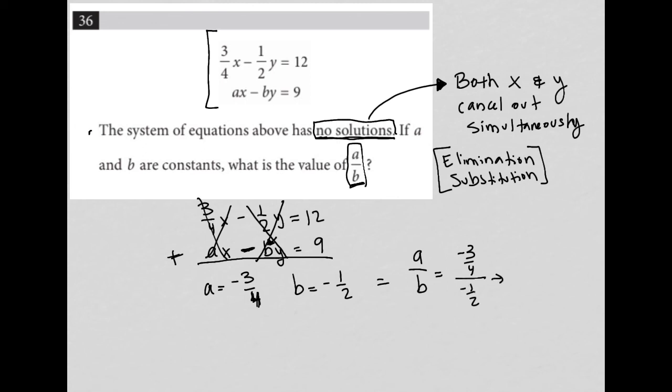I write that as negative three-fourths divided by negative one-half, which turns into negative three-fourths times negative two over one. Doing a little cross canceling, we get negative three times negative one, which is positive three, and two times one, which is two. So our answer is three-halves.